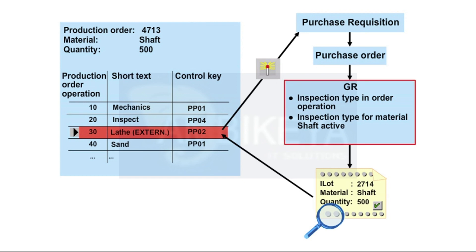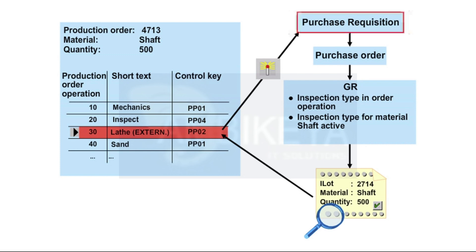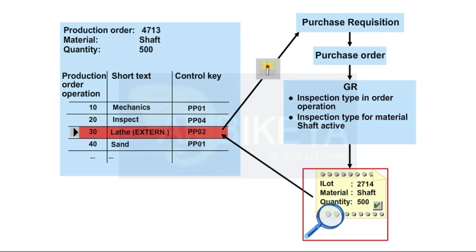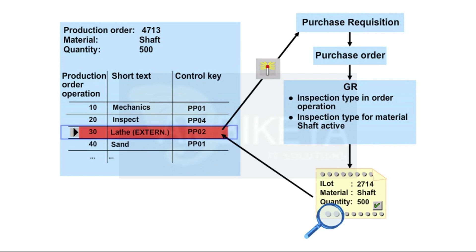An inspection type is assigned to the operations. This inspection type is activated in the material master of the finished product. When the order is generated, the purchase requisition is used to create a purchase order for the operation to be externally processed. An inspection lot is created when the goods are received from external processing. You can define special inspection plans for the goods receipt inspection from external processing.